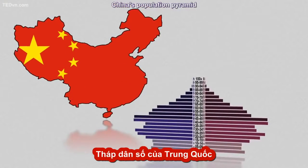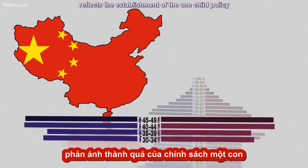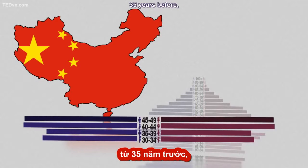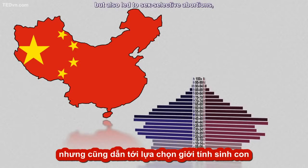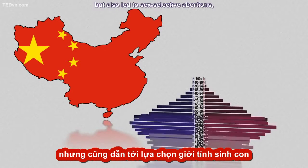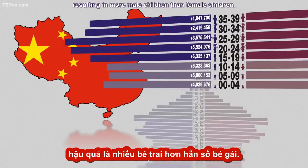China's population pyramid reflects the establishment of the one-child policy 35 years before, which prevented a population boom such as that of Rwanda, but also led to sex-selective abortions, resulting in more male children than female children.